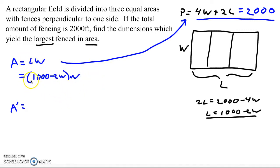Notice this is now an equation with only one variable. We can clean it up a little bit. That's 1,000W minus 2W squared.